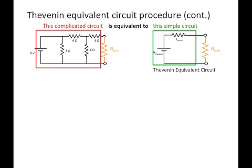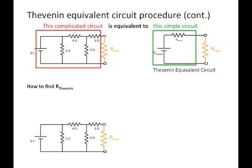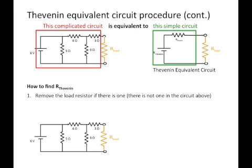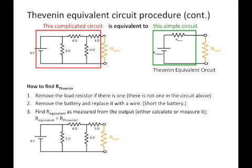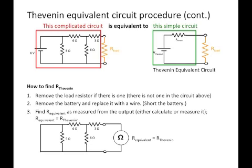Now we know how to find V_Thevenin. How do we find R_Thevenin? We remove the load resistor if there is one, remove the battery and replace it with a wire — essentially we're going to short out the battery — and then find R equivalent as measured from the output, either calculated or measured. We remove the load resistor, short out the battery, then measure the resistance by hooking up an ohmmeter to the output. R equivalent is just equal to R_Thevenin, whatever we measure or calculate.